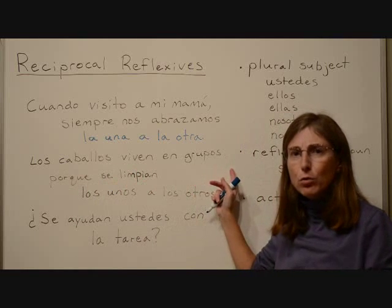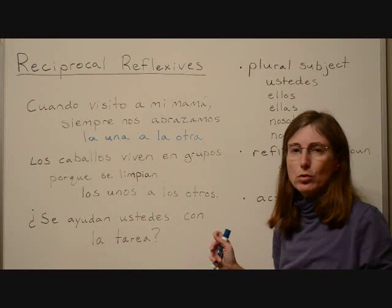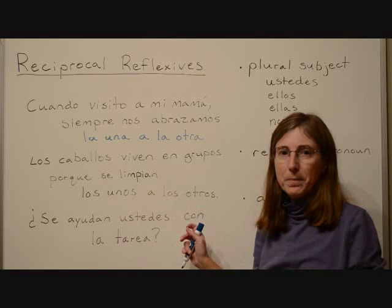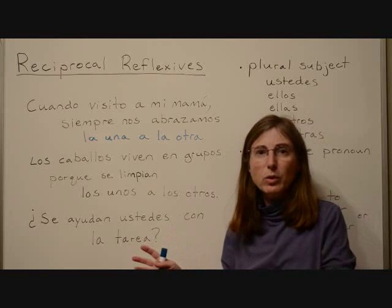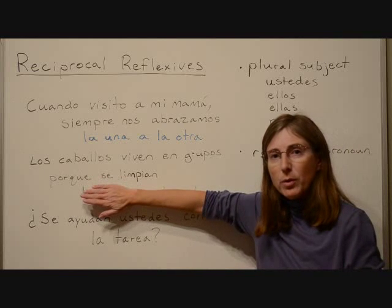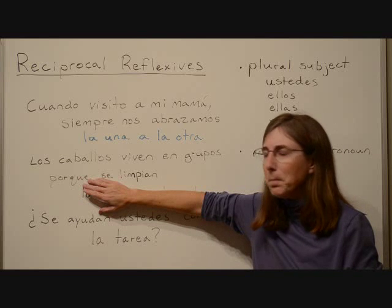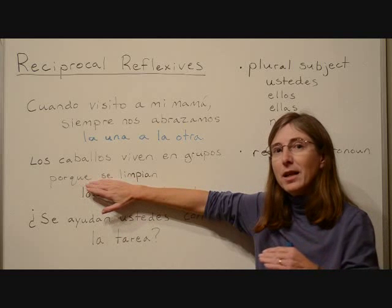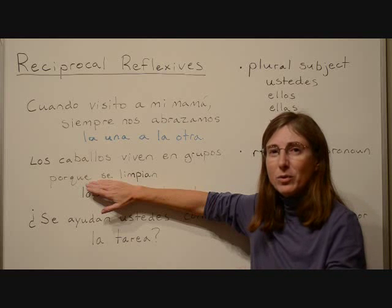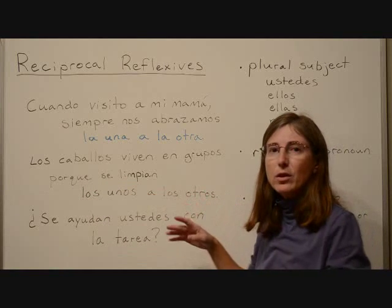'Los caballos viven en grupos porque se limpian los unos a los otros.' — The horses live in groups because they clean one another. In this sentence, we put 'one another' on the end because if we leave it off — if we just say 'los caballos viven en grupos porque se limpian' — it could mean that they clean themselves, because 'se limpian' is also the regular reflexive form of the verb. So we have to put 'los unos a los otros' on the end to say they're cleaning one another.